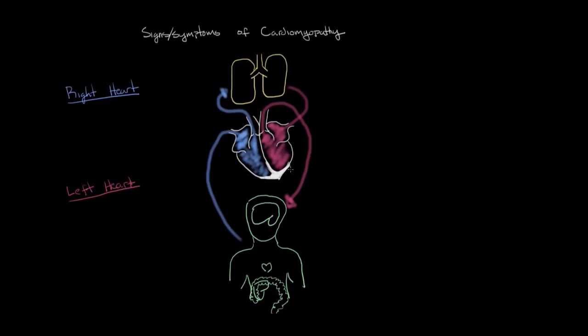So in cardiomyopathy, there's a disease of this heart muscle, and this disease causes the pump to fail. When the pump fails, blood is no longer adequately able to be sent out of the right heart to the lungs, or the left heart to the body, and subsequently, since it's not going forward out of the pump, blood is also getting backed up.